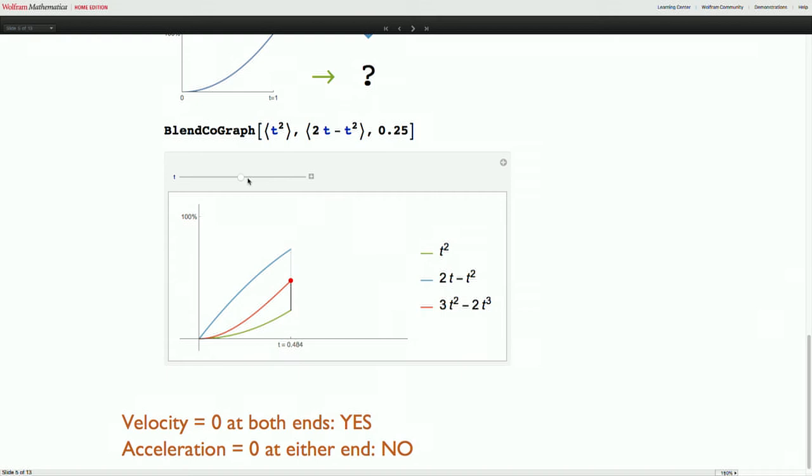And this is sometimes called smooth step. It starts like t squared smoothly and transitions between them and ends smoothly like the other one. But the acceleration just like the cosine is not 0 at either end yet.